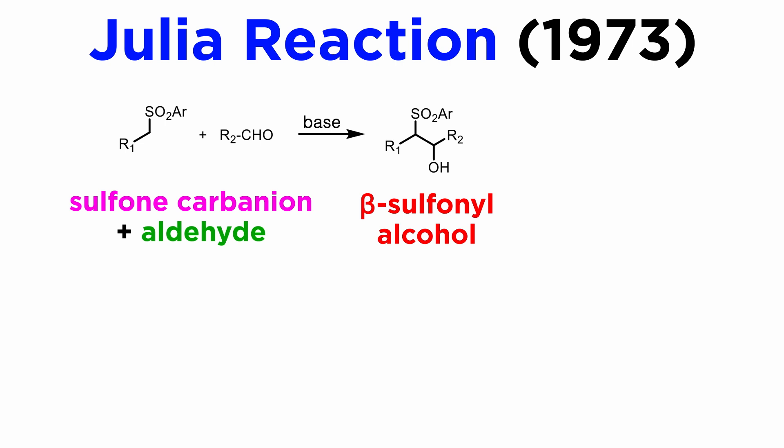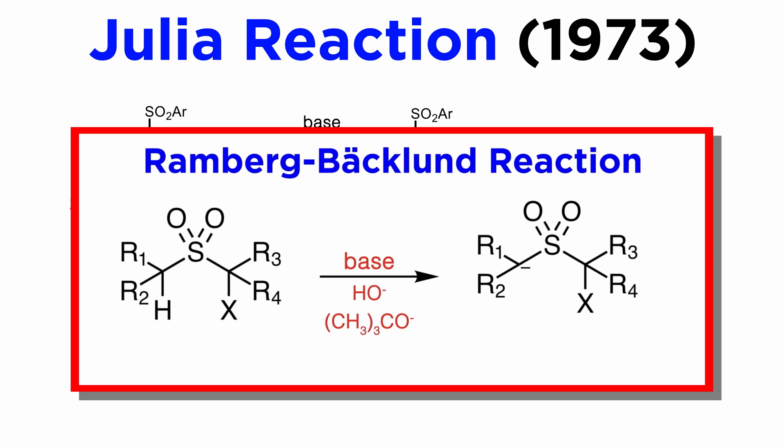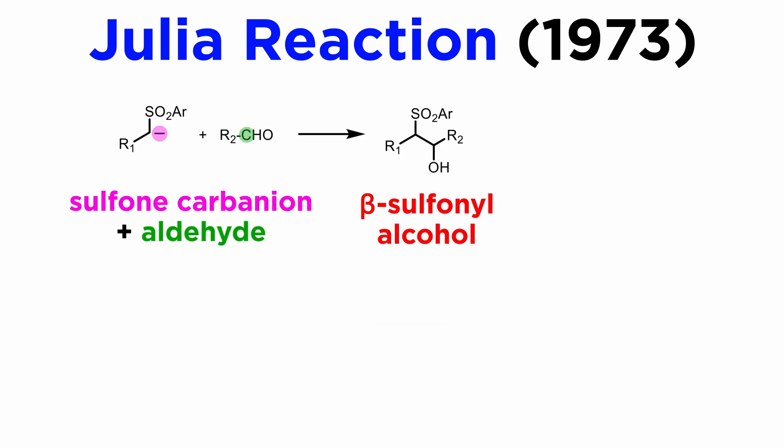The first step is conceptually simple. When discussing the Ramberg-Bäcklund olefination, we saw that sulfones easily form alpha-carbanions when treated with base. In this case, the carbanion, which is the nucleophile, reacts with a carbonyl compound, the electrophile, to yield the primary adduct.